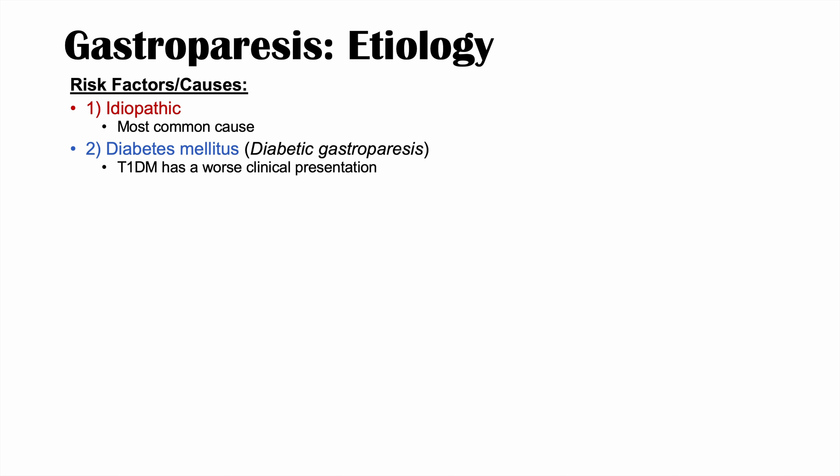Diabetic gastroparesis occurs through nerve damage or injury to neurons innervating the stomach. In diabetic neuropathy, the longest neurons become affected first, so we often see neuropathy in the lower extremities before diabetic gastroparesis develops. As the neuropathy worsens, shorter neurons — including those in the stomach — become affected.